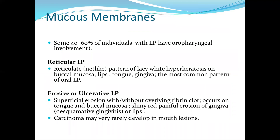Mucous membranes: 40 to 60 percent of individuals with lichen planus have oropharyngeal involvement. Reticular lichen planus shows a reticulate network pattern of lacy white hyperkeratosis on buccal mucosa, lips, tongue, and gingiva — this is the most common pattern of oral lichen planus. Erosive or ulcerative lichen planus features superficial erosion with or without overlying fibrin clot on tongue and buccal mucosa, and shiny red painful erosions of the gingiva. Carcinoma may very rarely develop in mouth lesions.